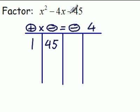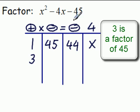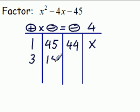1 times 45 is the 45. We're looking for the difference. This is 44. It's not equal to 4, so we don't put that in there. Does 2 go into 45? No. Does 3 go into 45? Yes. So 3 goes into 45 15 times. The difference between 15 and 3 is 12. That's not right. It's not 4.